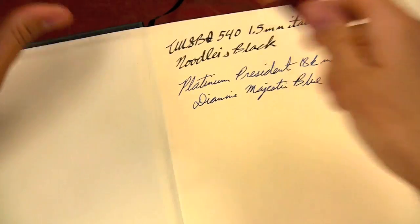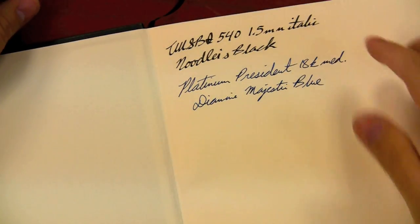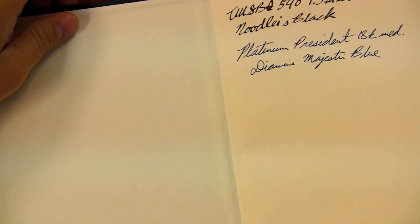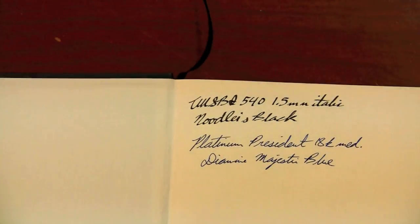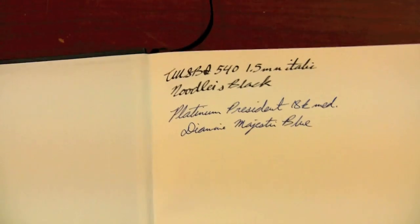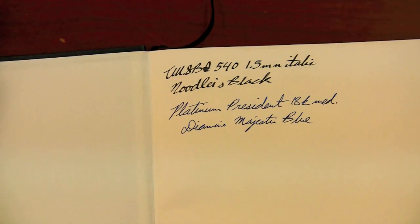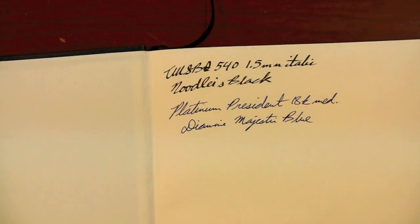I don't get any feathering on these, and this Twsbi is putting down a lot of ink. That black takes a little bit to dry. Actually, the Majestic Blue is pretty saturated ink too. It takes a little while to dry. That's probably the biggest downfall of this paper - it may take a little longer to dry if you're used to inkjet paper and stuff that's really absorbent.